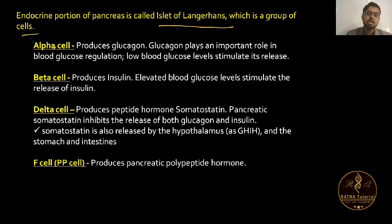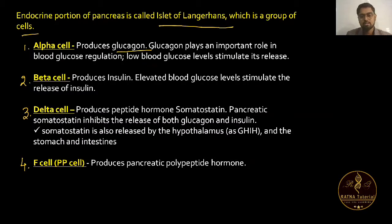The Islets of Langerhans contain: first, alpha cells; second, beta cells; third, delta cells; and fourth, F cells or PP cells. Alpha cells produce glucagon, which is a hormone.